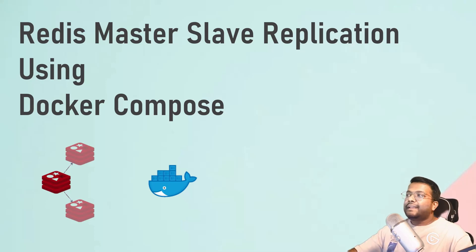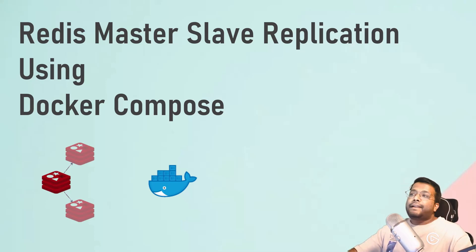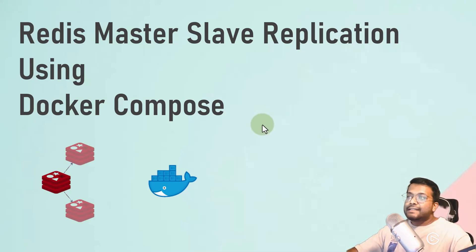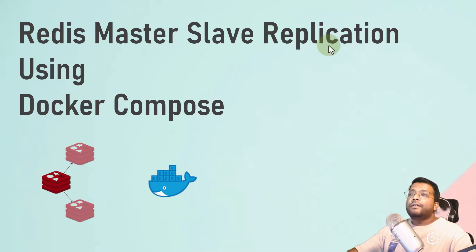Hello people, welcome back to my channel. Let's learn about Redis Master Slave replication using Docker Compose. Redis Master Slave is a system design paradigm where you have a Redis Master DB and a slave connected to it, so you can replicate data from the Redis Master. In case of any crash or full system shutdown of your master, the data is still safe and you can use it from the slave system.